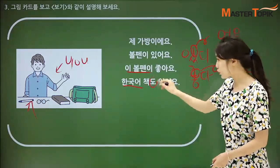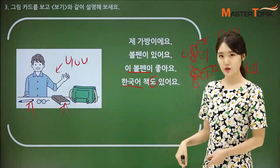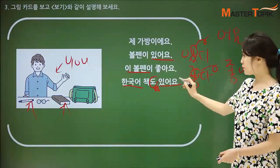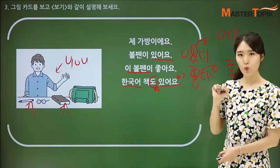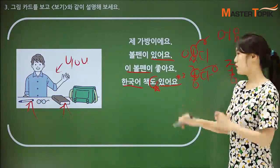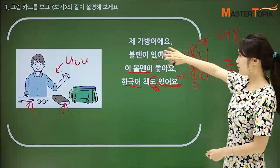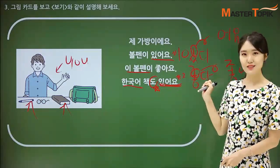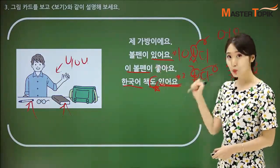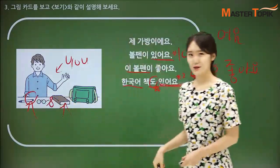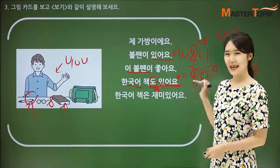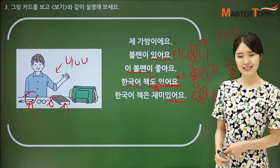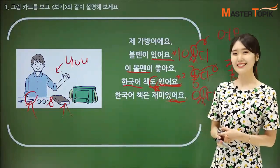한국어 책도 있어요 — also, I have a Korean book. Do you see 도 here? 있어요. Because 있어요 was already used in the first sentence, for the second one you use 도: 한국어 책도 있어요. 한국어 책은 재미있어요 — 재미있다, 있어요. This Korean book is very fun. 한국어 책은 재미있어요.